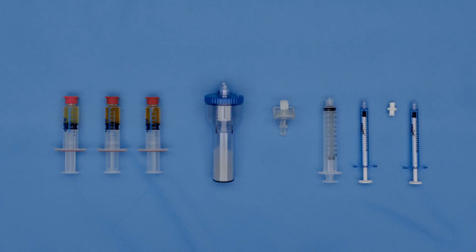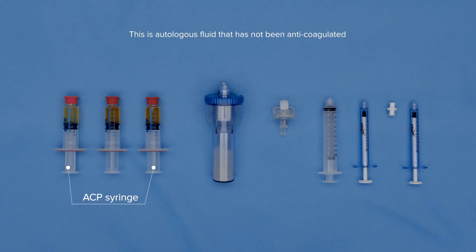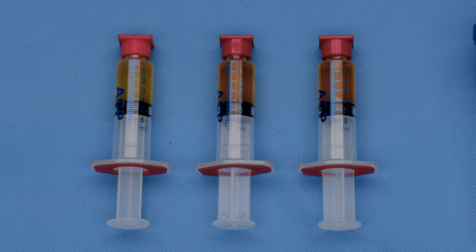Hi everybody, today I'm going to show you how to use the thrombinator device. For that you need in total 12 ml of ACP divided into 3 ACP syringes, 4 ml per syringe.